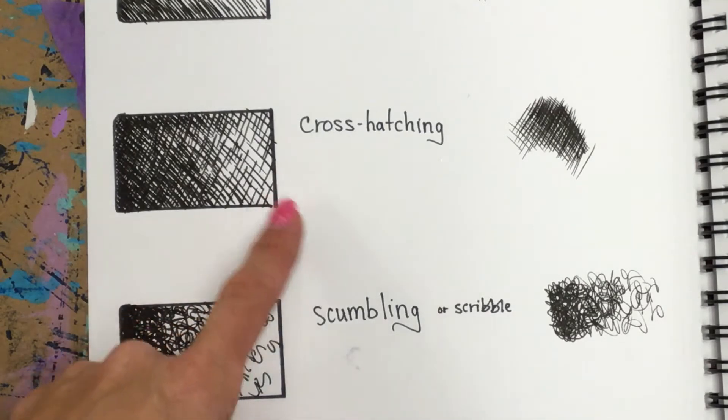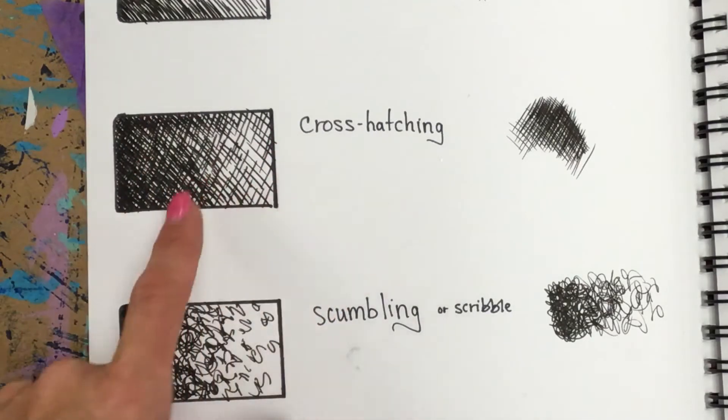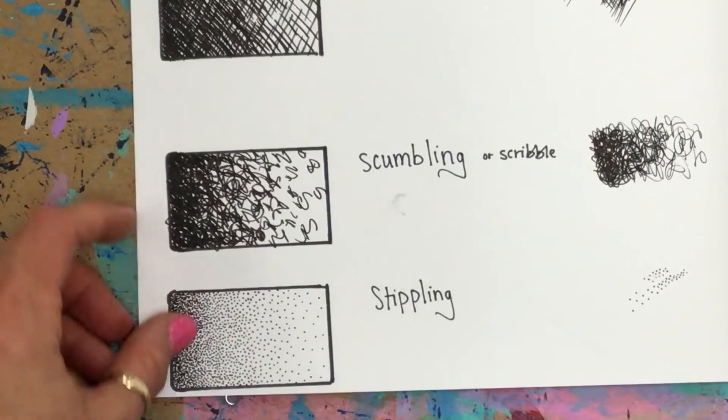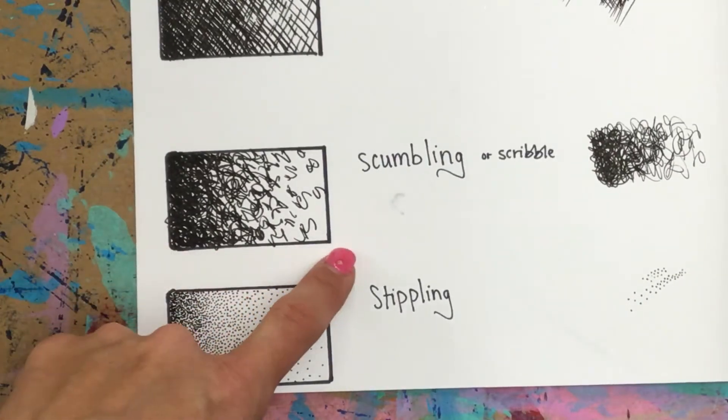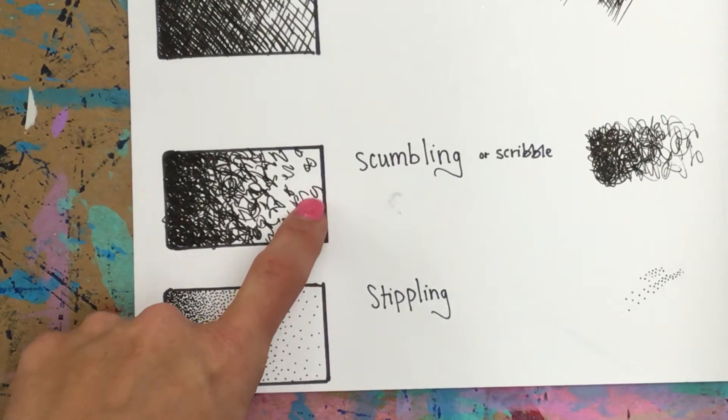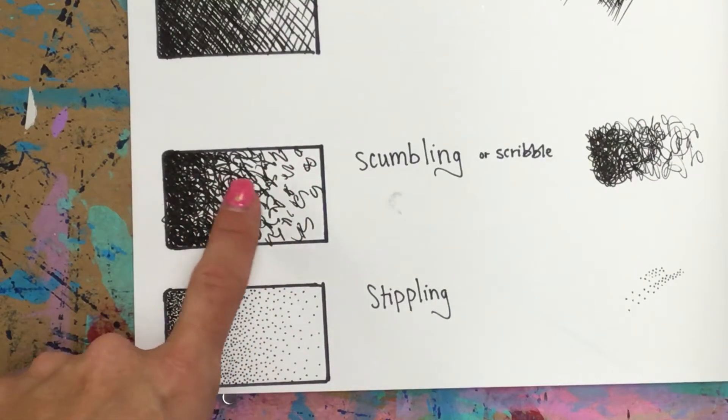Same type of thing: lines spaced out one direction and the other, and then gradually add in the darker. Scribbling or scumbling, similar to what we did with the doodling pages, adding little tiny scribble marks across here and then gradually adding them till they get thicker.